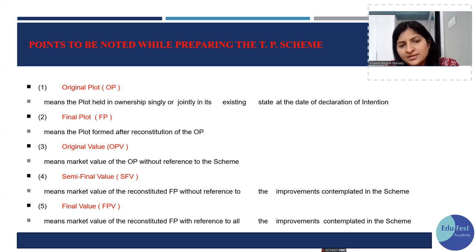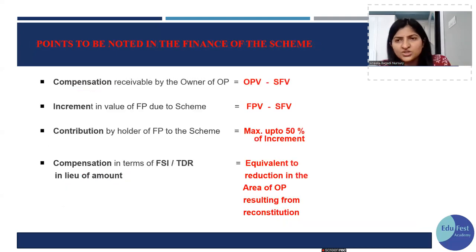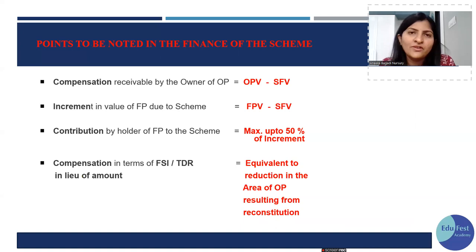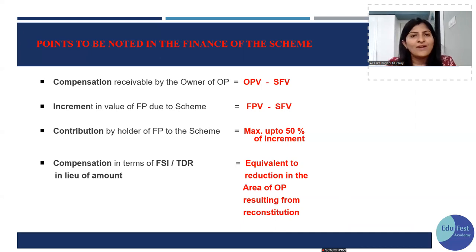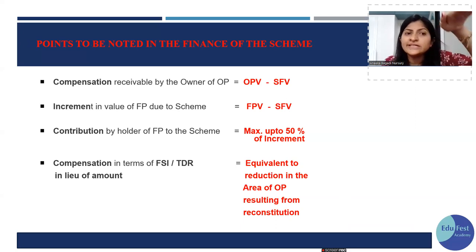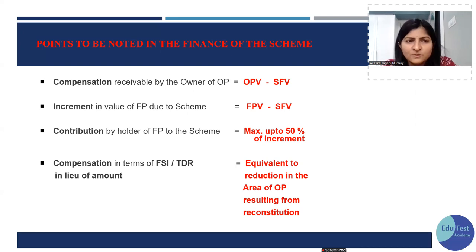Compensation means: suppose my plot was worth 1 lakh and the semi-final value comes out to 80,000, so the planning authority has to give me compensation of 20,000. But if my plot was worth 1 lakh and the semi-final value comes out to 1 lakh 27,000, then the value of my plot has increased. The increment is the difference between the final plot value and the semi-final value — that is the increase in value.